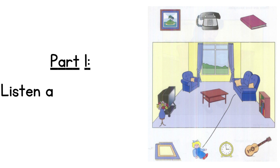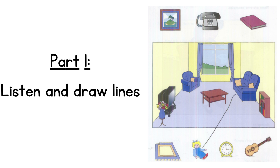Part one. Look at part one now. Look at the picture, listen and look. There is one example. Put the doll in front of the sofa. Right. Can you see the line? This is an example. Now you listen and draw lines.